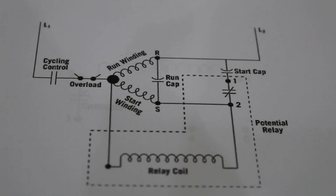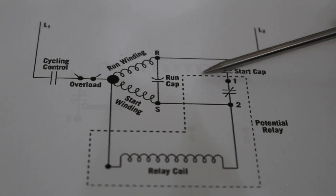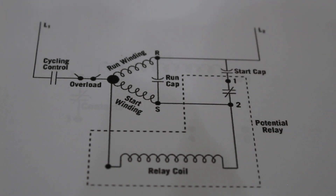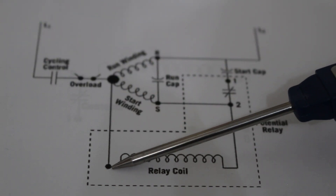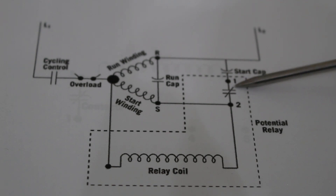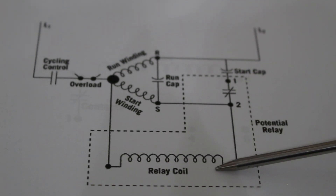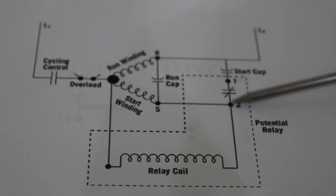Now we're going to go over two wiring diagrams — first for the potential relay, then for the current relay. Inside our dotted lines is our potential relay. We have three points: 5, 2, and 1 — it also has a nickname of a 5-2-1 relay. Between 5 and 2 we have our coil, specifically our high-resistance coil. And between 2 and 1 we have our normally closed contacts.